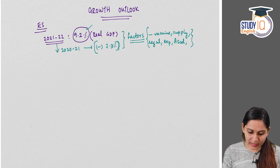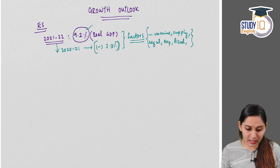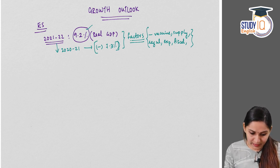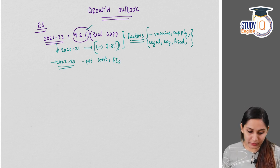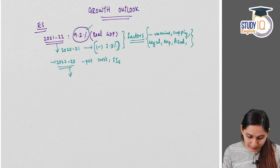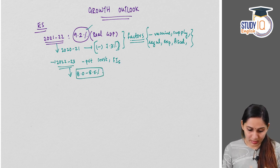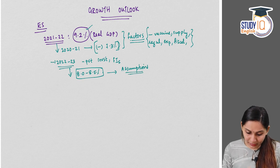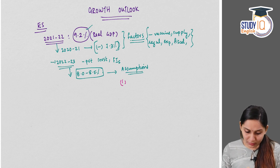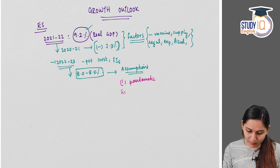The survey expects that in the upcoming financial year 2022-23, private sector investment will pick up, financial institutions will be in a good position to support the revival of the economy, and therefore growth will be around 8 to 8.5%. This projection is based on certain assumptions: no further pandemic-related economic disruptions, normal monsoon, and withdrawal of global liquidity by central banks.